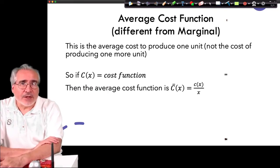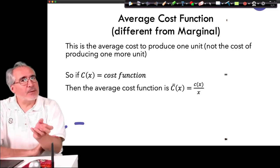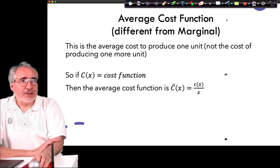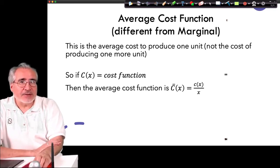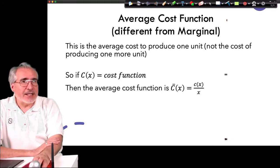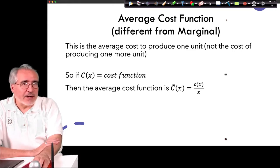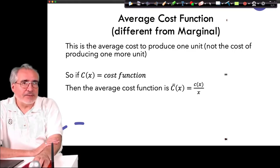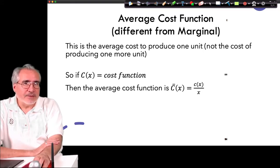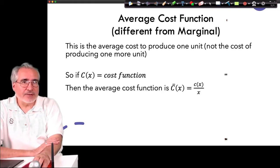If we want to know the profit on the 501st unit sold, we take the derivative and plug in 500 — that tells us the profit on that last unit. There's also the average cost function, which doesn't involve calculus because we're not taking a derivative. We simply divide the cost of producing X units by X, so it's C(x) divided by x — that's the average cost function.